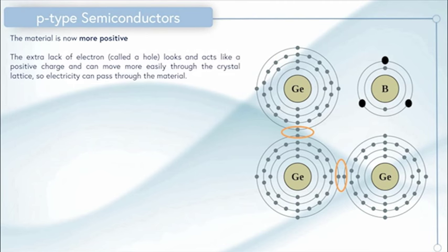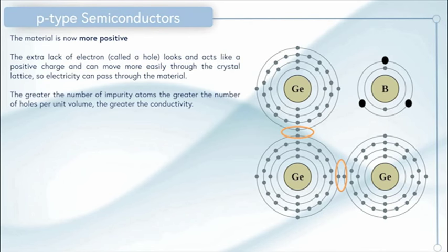The extra lack of electron, which is called a hole, looks and acts like a positive charge and can move more easily through the crystal lattice so electricity can pass through the material. As before, the greater the number of impurity atoms, the greater the number of holes per unit volume, and the greater the conductivity. Sometimes people find it difficult to get clear in their head what a hole is. Essentially, it's an imaginary positive charge, which is caused by the lack of an electron.